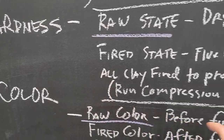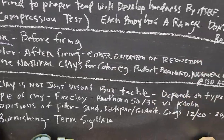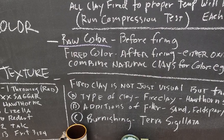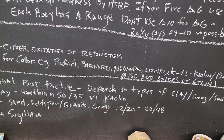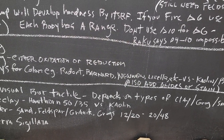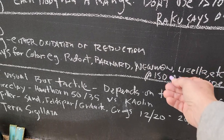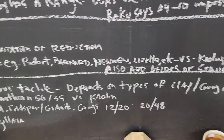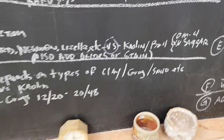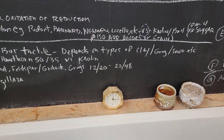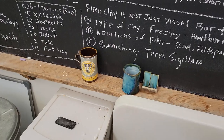Now color: there are two things to think about — the raw color before firing and the fired color. The fired color can be affected by oxidation or reduction. You can combine natural clays in a clay body — like red art, an earthenware clay, to add iron and give the body color — or you can add Barnard or Newman, a fire clay, or Lizella. That's versus using kaolin, which is white, or ball clay, which is off-white. You can also add stains and oxides to clay bodies to make colored clays.